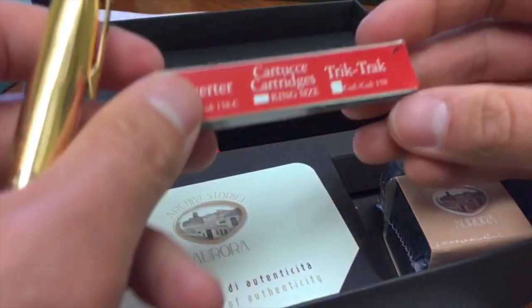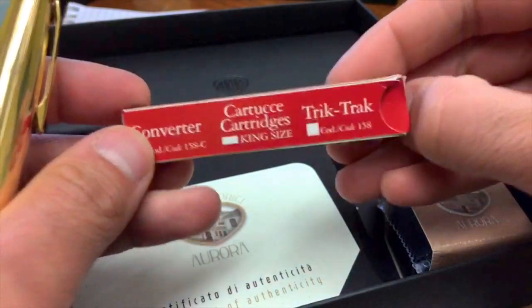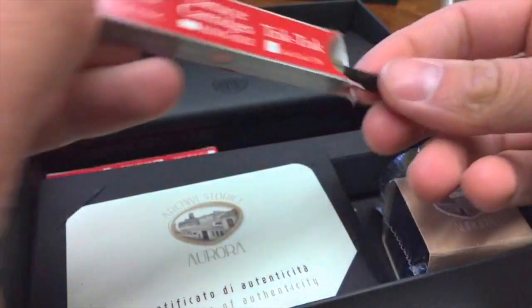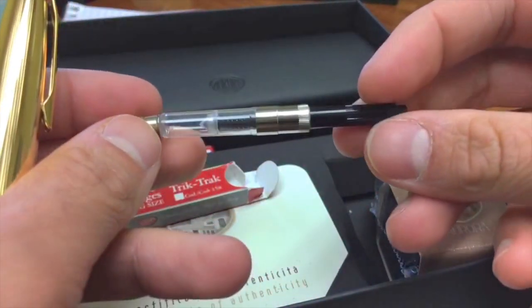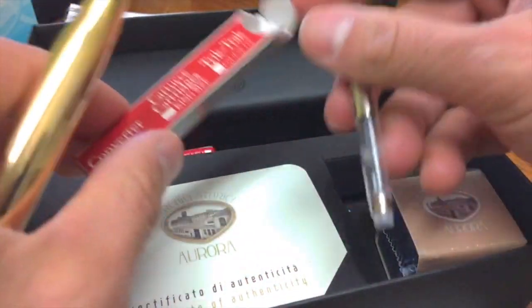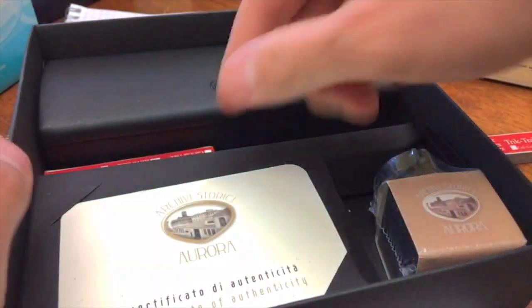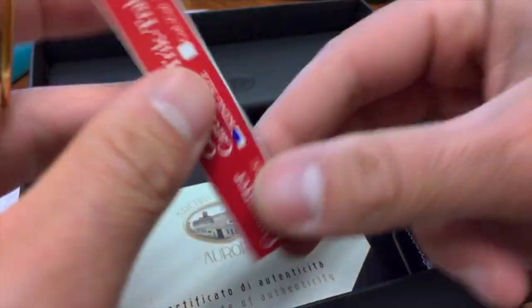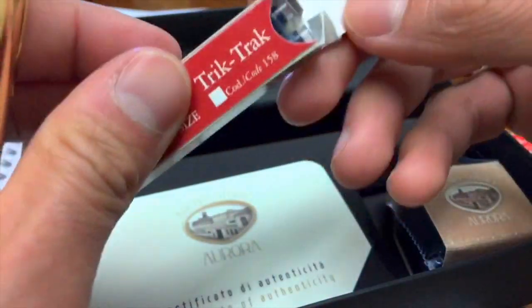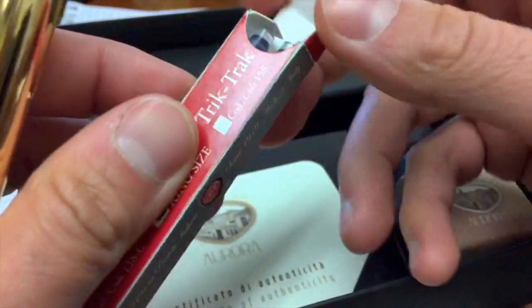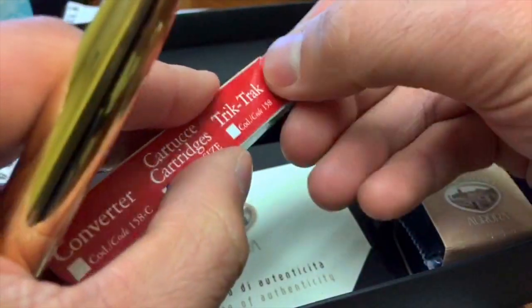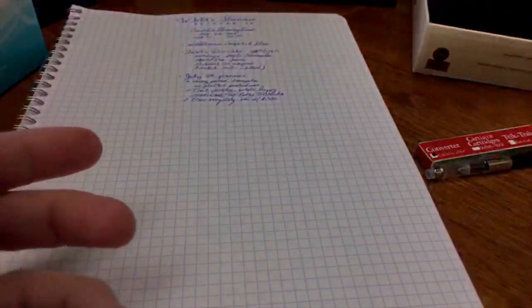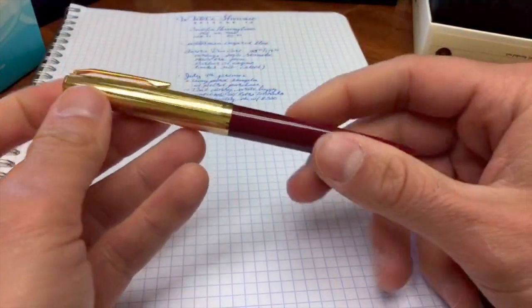It has a little bottle of Aurora ink that's in here. It has got a converter. So this is the screw type converter, which I will remove here. This has got the Aurora screw piston converter, which we will leave aside here because we're going to use that. It also has an Aurora cartridge here, too. So we have two cartridges in here, which is cool.